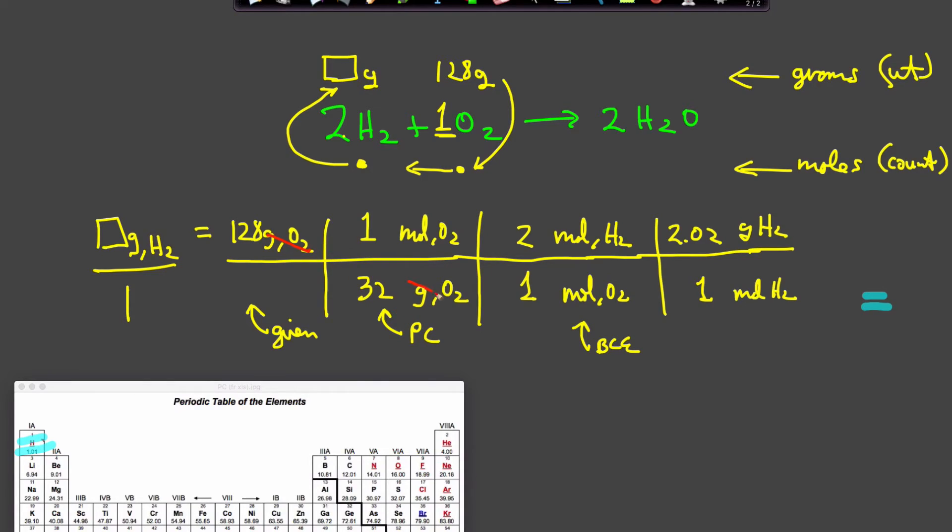Are we done with dimensional analysis and ready to pick up our calculator? Let's see - I started with grams of O2 and crossed that off. Moles of O2 crosses off, moles of H2 gets cancelled out. What's left is grams of H2, which is what I'm looking for. That tells me I've completed my dimensional analysis grid. When I multiply, I get 16 grams of H2. And there you have your first stoichiometry problem.